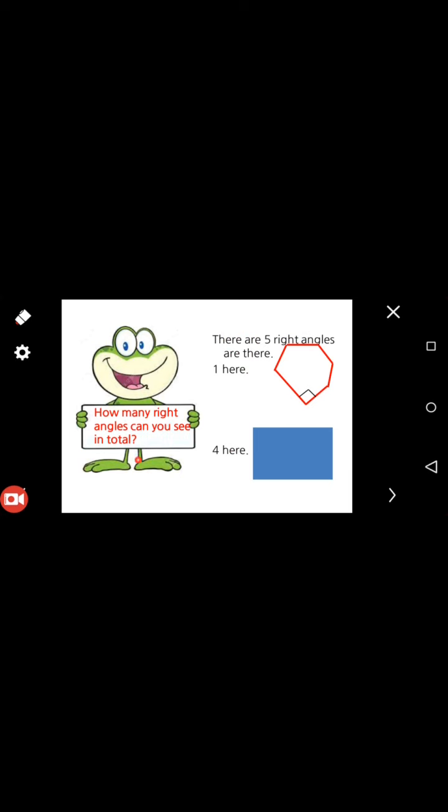How many right angles can you see in total? Yes, in first diagram, in first shape, there are five right angles. Is it? No, it has only one, and four right angles are here: one, two, three, four. So dear students, this is the end of the class.